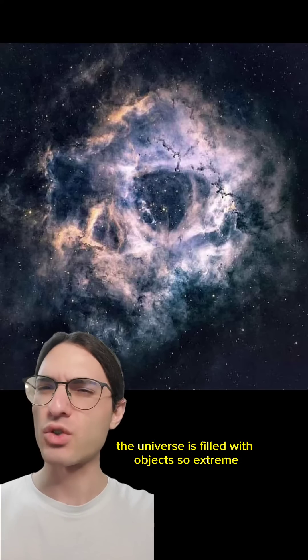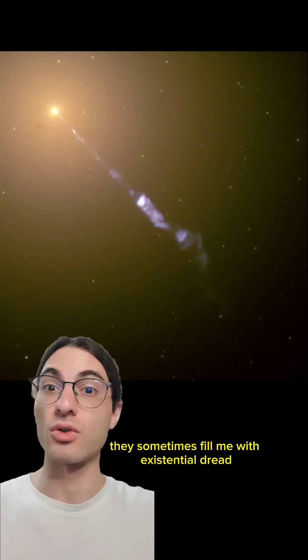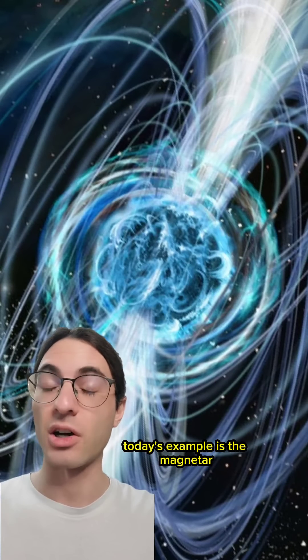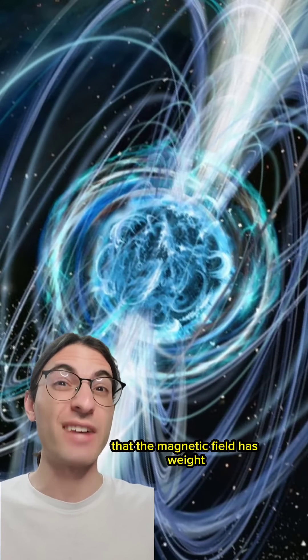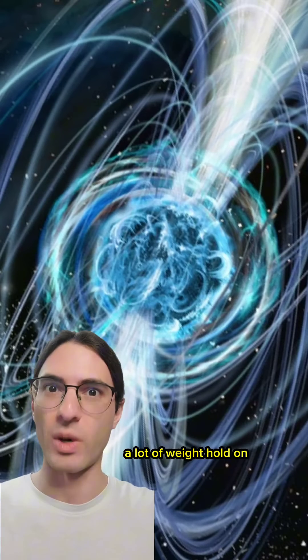The universe is filled with objects so extreme they sometimes fill me with existential dread. Today's example is the magnetar, a type of neutron star that has a magnetic field so strong that the magnetic field has weight. A lot of weight.